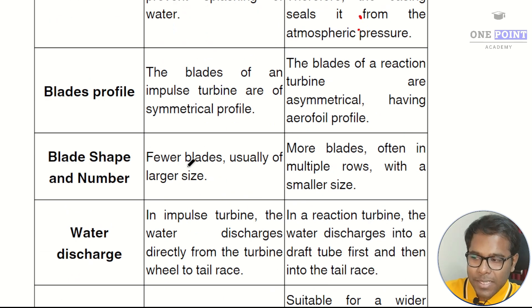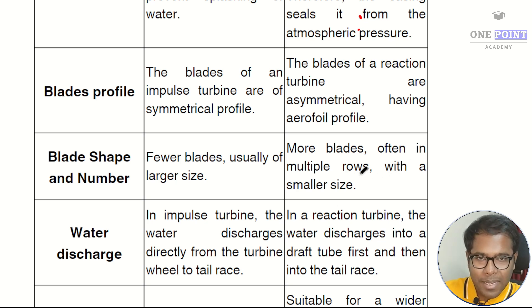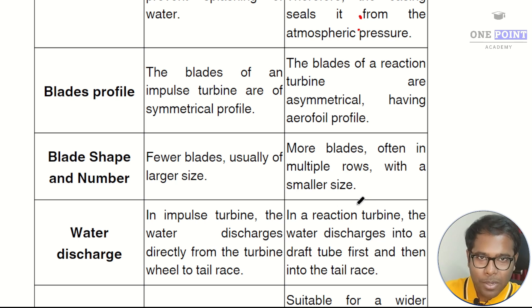The next difference is based on blade shape and number. There are very few blades, usually of bigger size, in an impulse turbine, whereas in a reaction turbine there are a very large number of blades arranged in multiple rows but those blades are smaller in size.